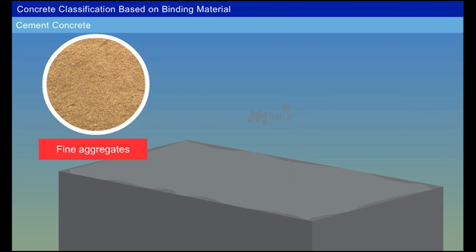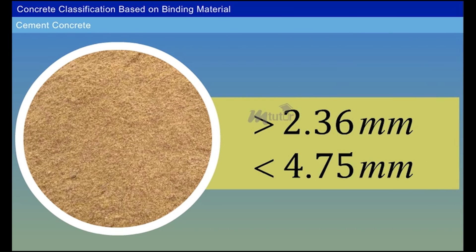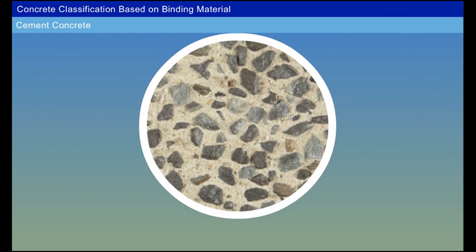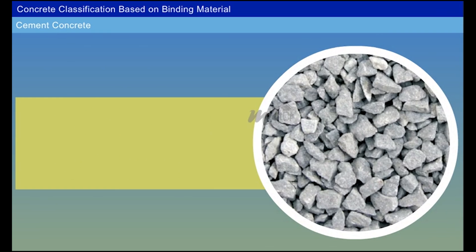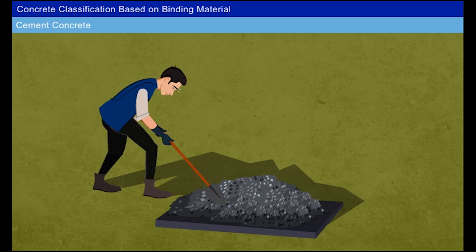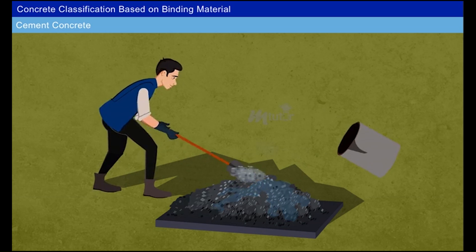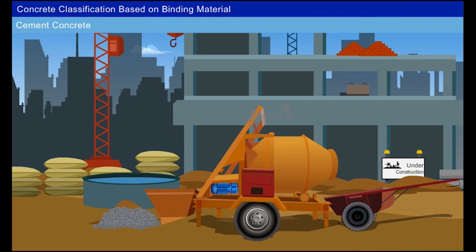Two types of aggregates are used in concrete: fine aggregates and coarse aggregates. Fine aggregates are of size greater than 2.36 millimeters and less than 4.75 millimeters, and are used to make concrete denser by filling the voids of coarse aggregates. Coarse aggregates are usually larger than 4.75 millimeters and less than 20 millimeters, and are used to make concrete stronger and tougher. Water plays a vital role in mixing, dampening the aggregates and giving homogeneity to the concrete.